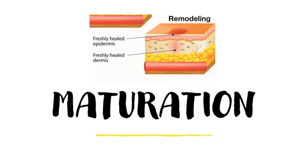Cells and capillaries that are no longer needed begin to thin out. During this phase, the repairs made during the proliferation phase are made even stronger. The original collagen material is replaced with a different, stronger type of collagen, and it is also arranged in a more favorable pattern. The wound continues to contract, and towards the end of the maturation phase, the wound is permanently sealed with a collagen-rich scar tissue that has little of the cell activity present during the proliferative wound healing phase.